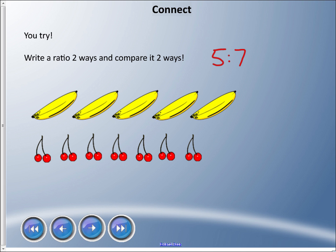I could compare cherries to bananas, which would be 7:5. Those are part-to-part ratios.